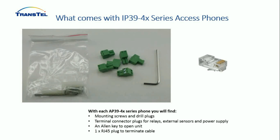The box also contains screws and wall plugs for mounting, terminal connector plugs for the relays, externals, connections, and power supplies. The Allen key is a special key to open up the phone — don't lose it. There is also an RJ45 plug included, which we'll explain further when discussing mounting and installation.